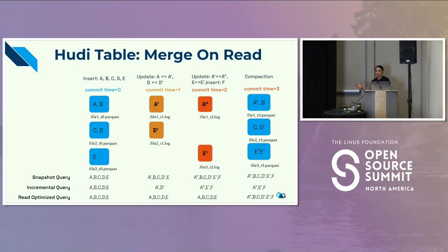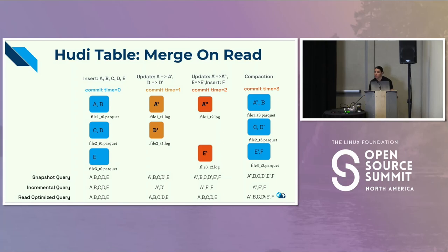Running a snapshot query now gives all the current state: A double prime, B, C, D prime, E prime, and F — everything got merged. The updates are now merged into a new Parquet file. Between commit time two and commit time three, the only thing happening is the compaction service — there is no actual insertion of data or updates. Running a read-optimized query now, you're reading the current state of the base file: A double prime, B, C, D prime, E prime, and F. So you have a new snapshot for the read-optimized query.